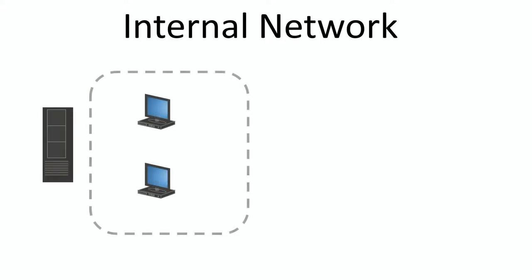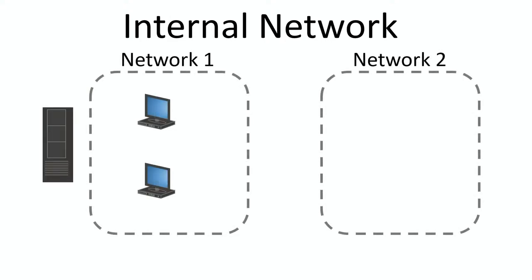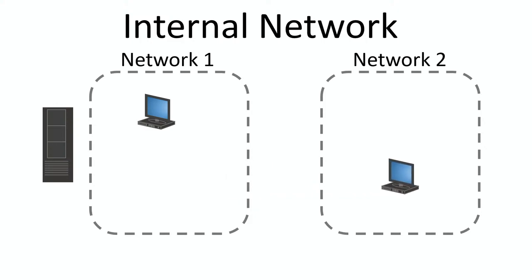To change an internal network, all you have to do is type in the name of a network. There's a default name in VirtualBox, but you can just change to a different name. If it says 'network one' and I change it to 'network two,' what's happened is I've now created two separate internal networks. Whatever system I type that name into is now going to be a member of that network.